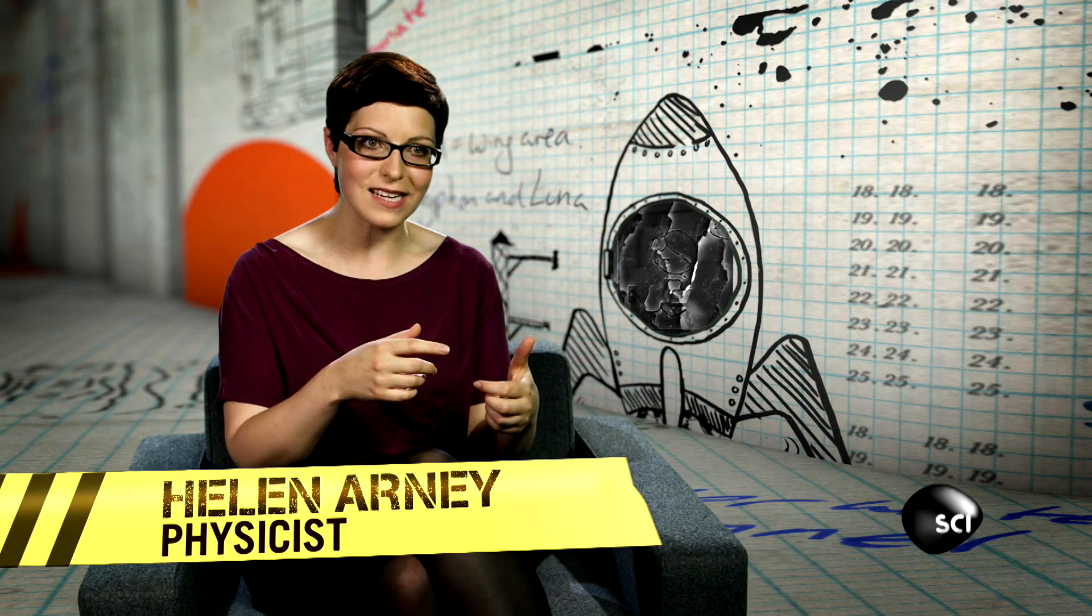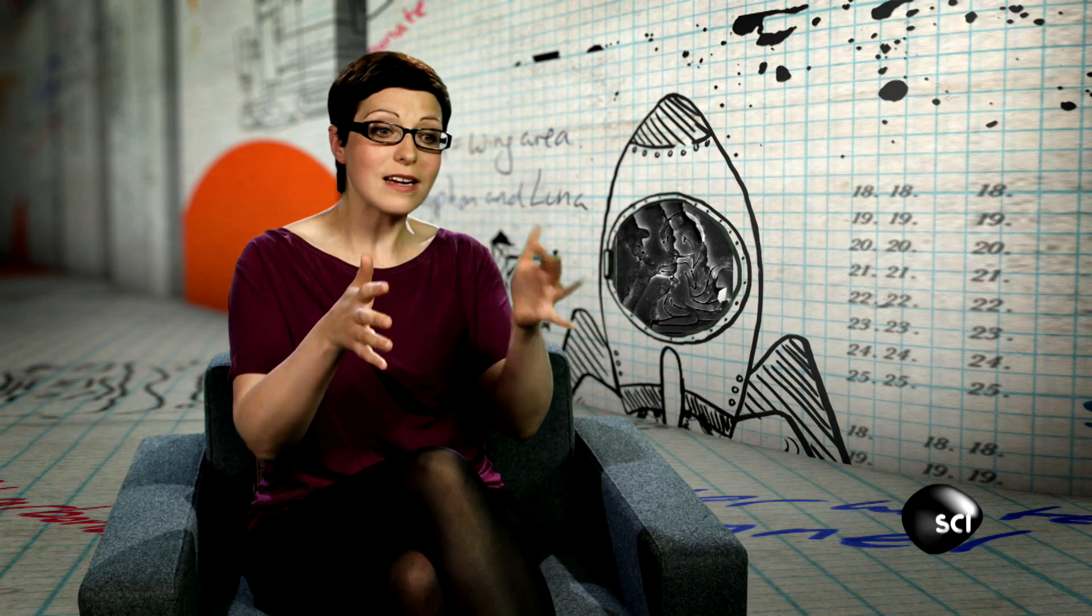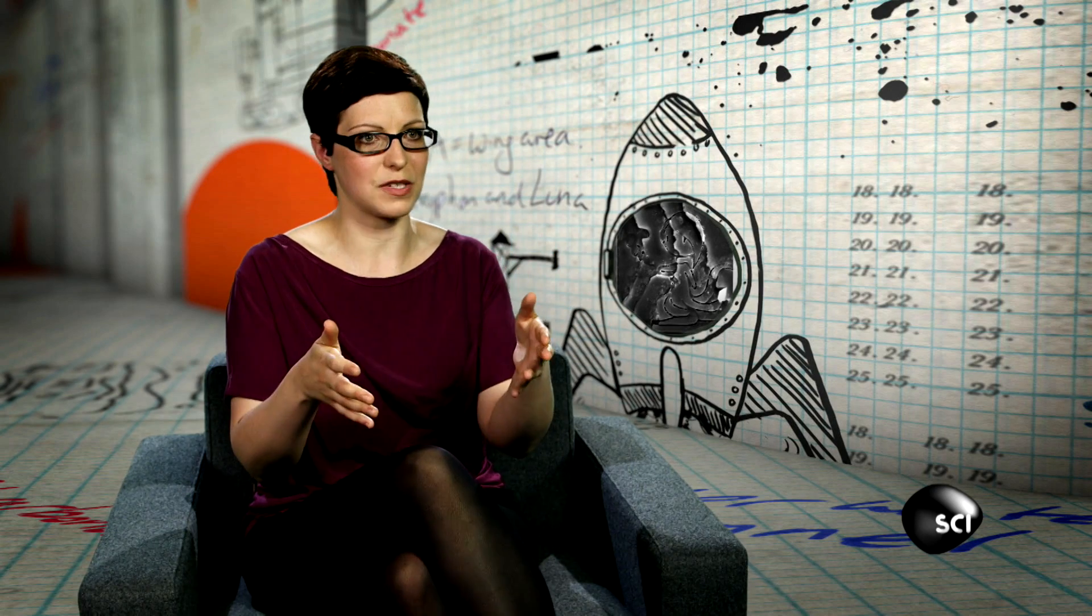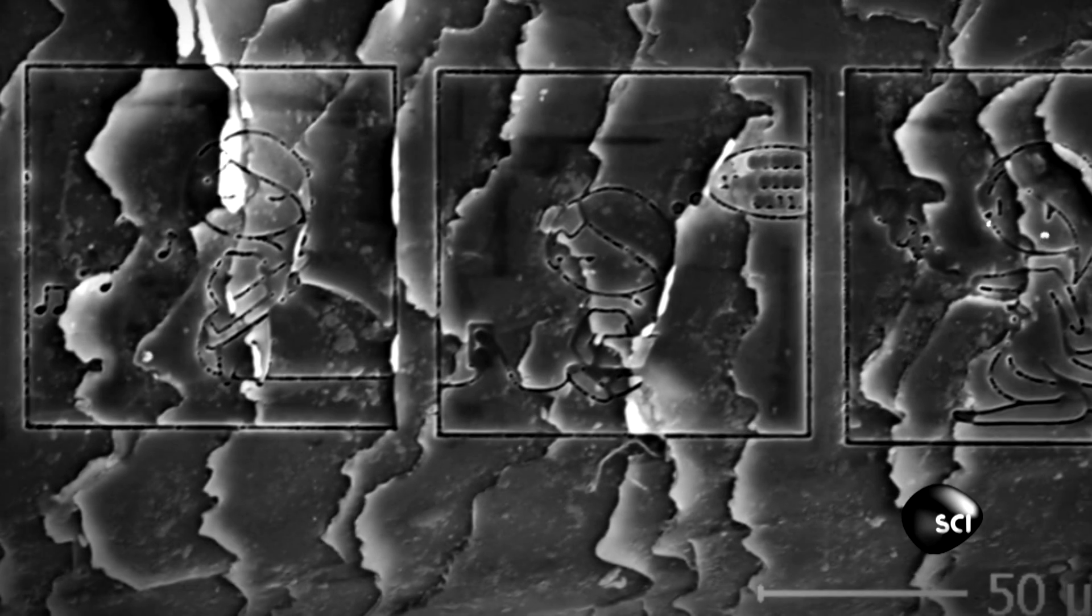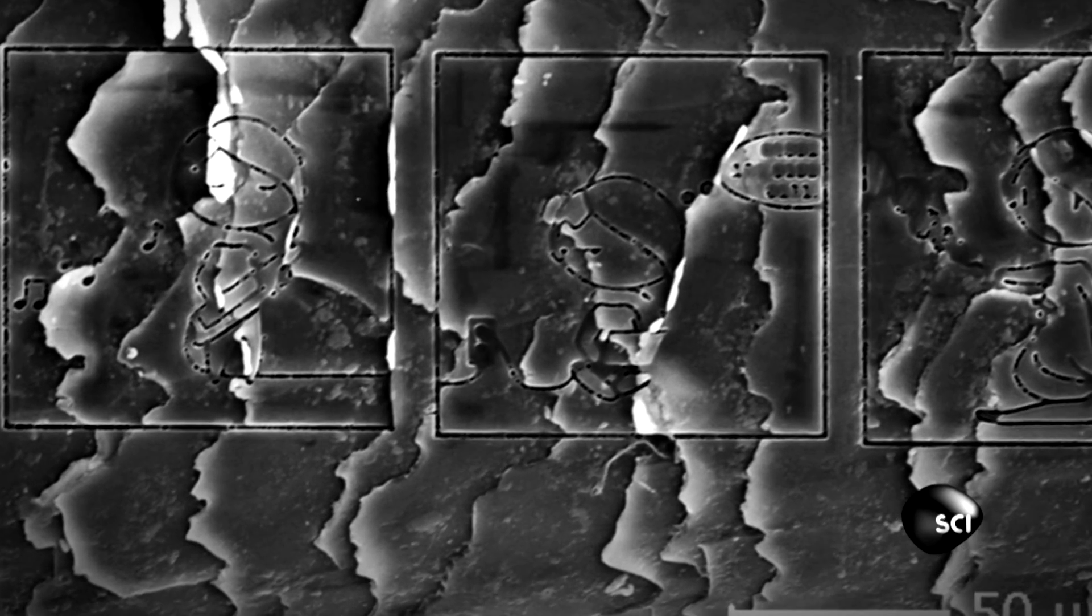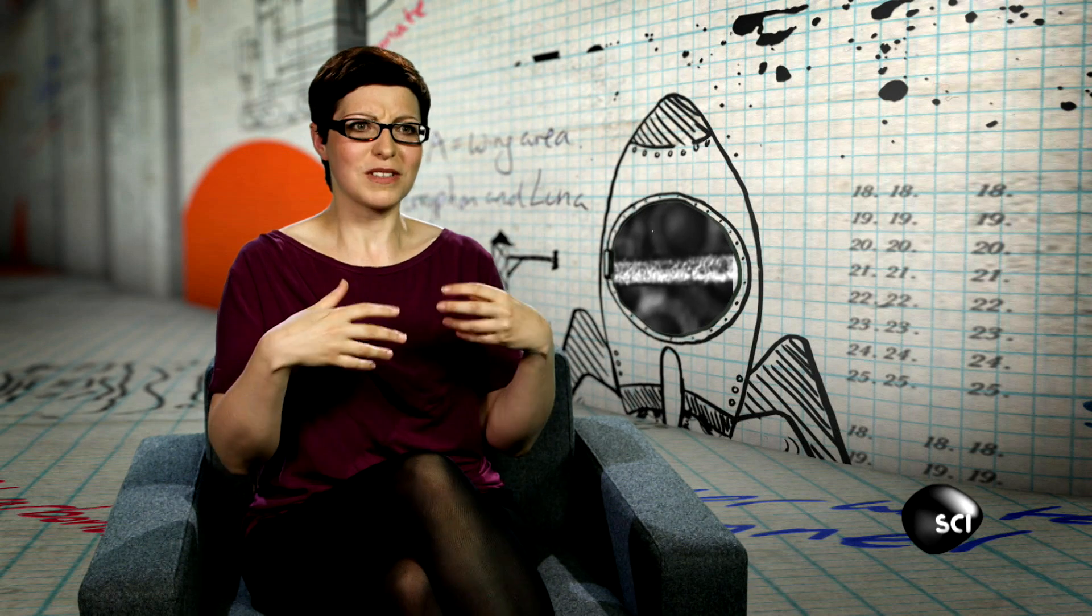These atomic bullets hit the hair with so much speed and so much energy that they break the bonds between the atoms in the hair itself, and they kind of scratch a hole in the surface, and that's what's used to draw these pictures.